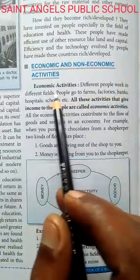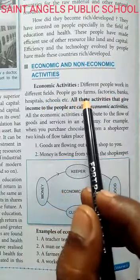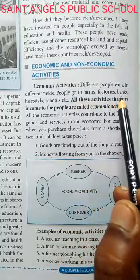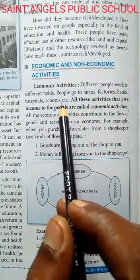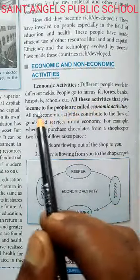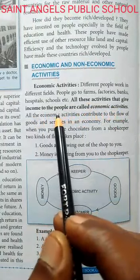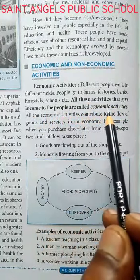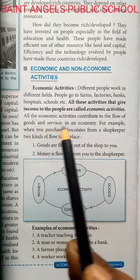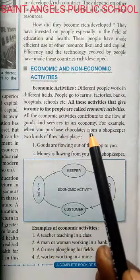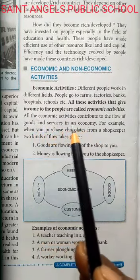Different people work in different fields. अलग-अलग तरह के लोग अलग-अलग कामों को करते हैं — कुछ खेती में, कुछ फैक्टरी में, कुछ बैंक्स में, कुछ हॉस्पिटल्स में, कुछ स्कूलों में। All these activities that give income to the people are called Economic Activities — इनके बदले लोगों को पैसा मिलता है। All economic activities contribute to the flow of goods and services in an economy — वो अर्थव्यवस्था में सामान और सेवाओं के प्रभाव में मदद करती हैं।